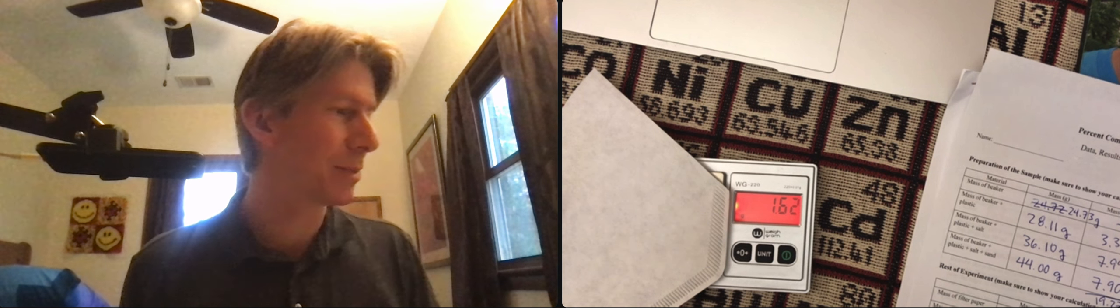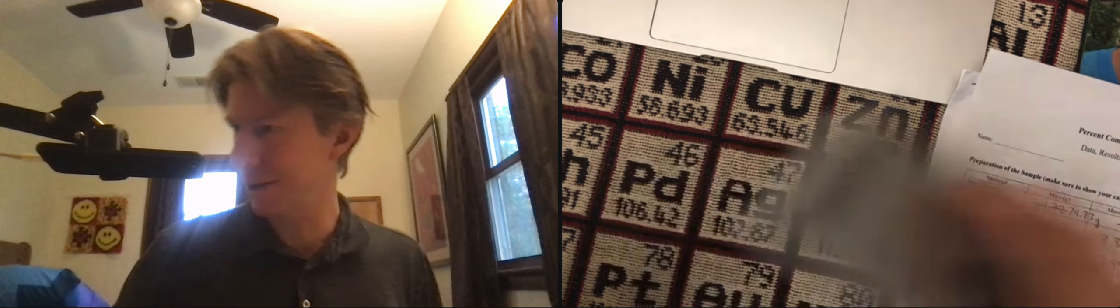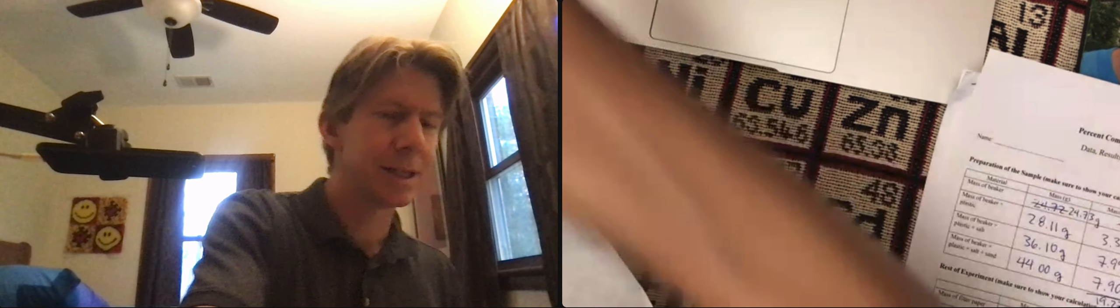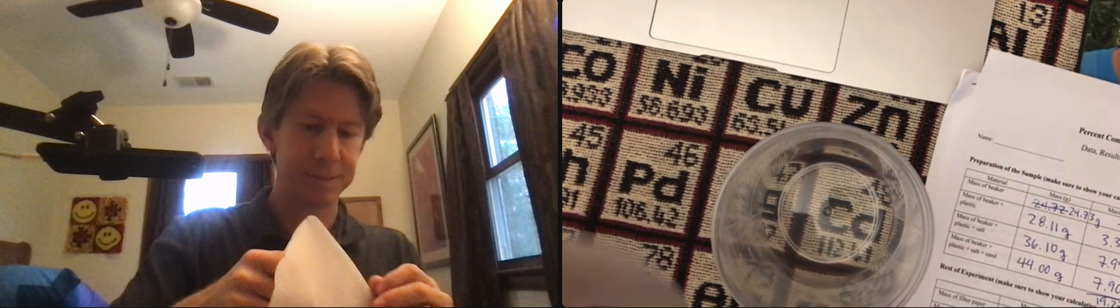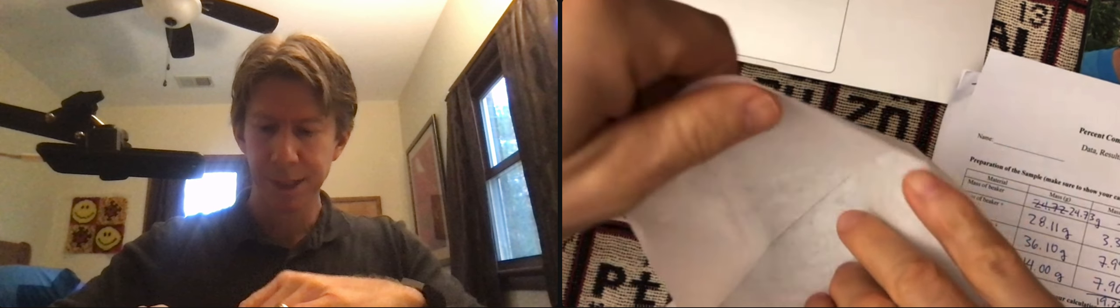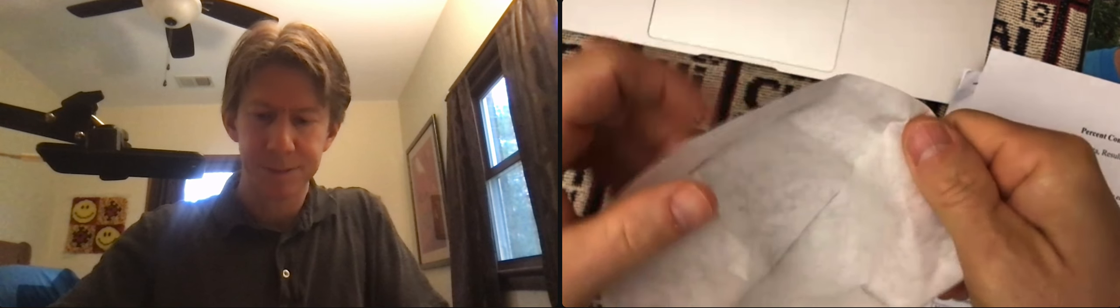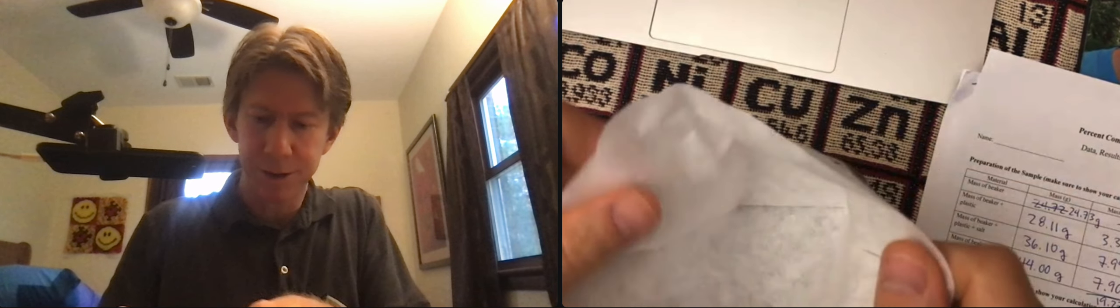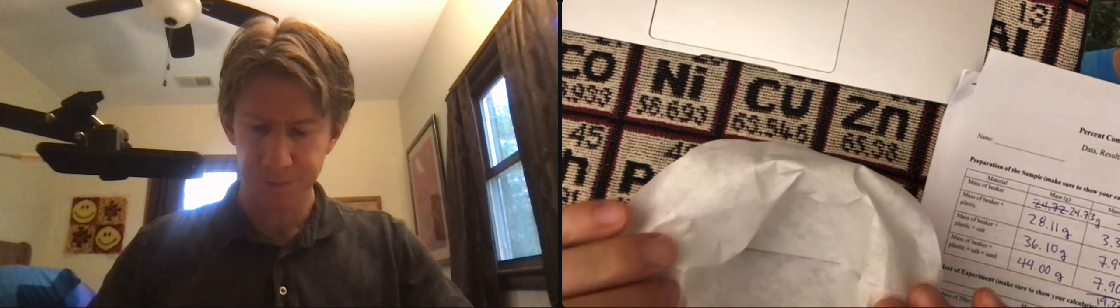Place the filter paper so it is open into the top of the 500 milliliter beaker. Here's what that looks like. So here's my 500 milliliter beaker. I'm going to open this up and drape the coffee filter paper around the beaker.